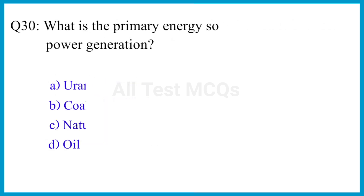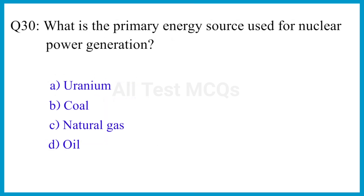Question number 30. What is the primary energy source used for nuclear power generation? The correct answer is option A. Uranium.